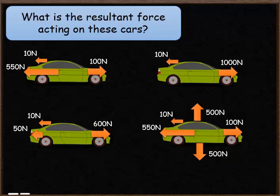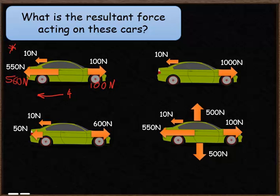Looking at the first practice question: the forward force is 100 newtons. The force acting in the backwards direction is split into two, so we need to add those two forces together. 550 plus 10 works out as 560 newtons backwards, with 100 newtons forwards. The backwards force is larger, so the direction of the resultant force will be backwards. The size of that force will be 560 take away 100, giving 460 newtons going backwards.